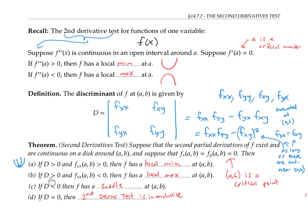In the second case, if the discriminant is positive and f sub x,x is negative, then f sub y,y will have to be negative also in order for the whole discriminant to be positive. So f sub x,x being negative is like saying we're concave down in the x direction, and f sub y,y being negative is like saying we're concave down in the y direction. It's plausible that we're concave down in every direction and have a local max. The discriminant being negative doesn't guarantee that f sub x,x and f sub y,y will have opposite signs, but in the case that they do, it makes sense we'll have a saddle — concave up in one direction and concave down in the other.